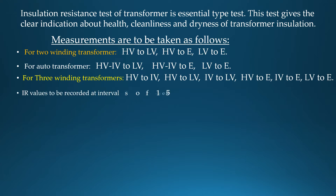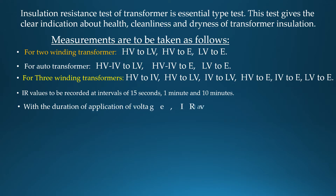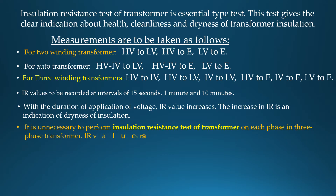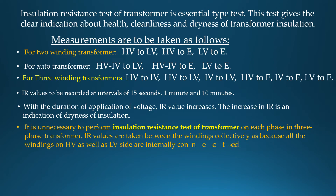IR values are to be recorded at intervals of 15 seconds, 1 minute, and 10 minutes. With duration of application of voltage, IR value increases. The increase in IR is an indication of dryness of insulation. It is unnecessary to perform insulation resistance test on each phase in a three-phase transformer, as IR values are taken between the windings collectively, since all windings on HV as well as LV side are internally connected together to form either star or delta.